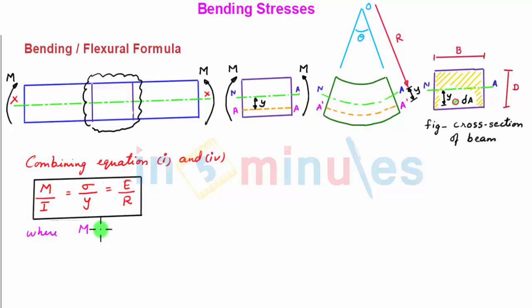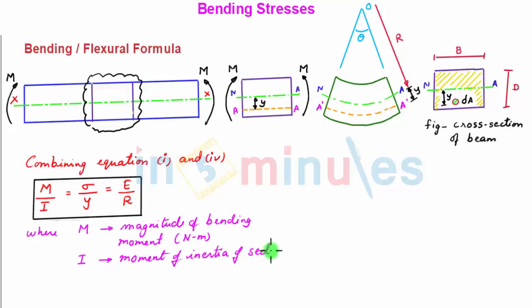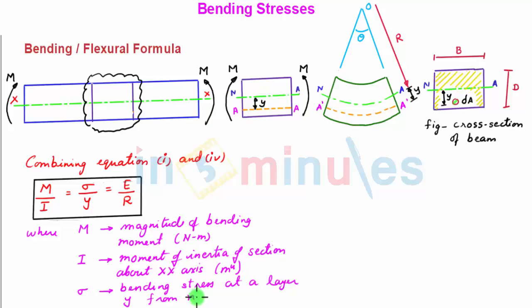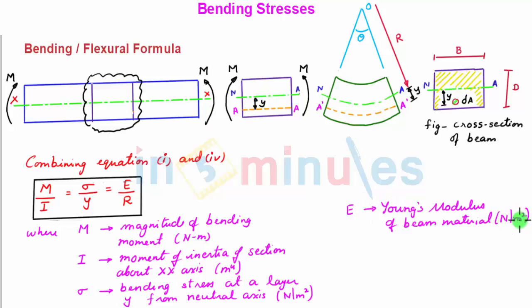In the flexural formula, M is the magnitude of the bending moment in Newton-meters; I is the moment of inertia of the section about the x-axis in meters to the power 4; sigma is the bending stress at a layer Y from the neutral axis in Newton per meter squared, which is a consistent unit with the bending moment; E is the Young's modulus of the material in Newton per meter squared; and R is the radius of curvature of the beam in meters.